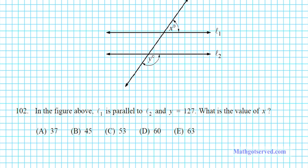Let's take a look at problem 102. It says in the figure above, L1 is parallel to L2, and y is 127. Anytime you're given the value of an angular measure in a problem, apply it to the figure. So since y is 127, I'm going to label the value of angle y as 127. Anytime we have two parallel lines cut by a transversal, corresponding angles are congruent. So this angle y corresponds to this angle here, meaning this angle is also 127.